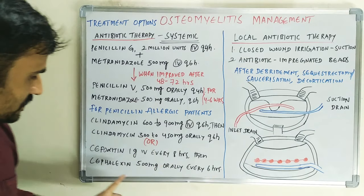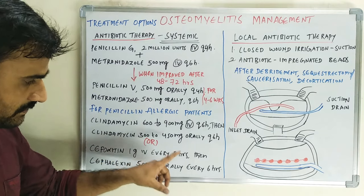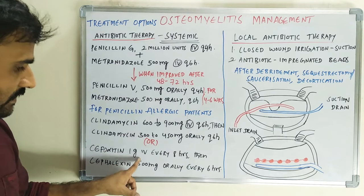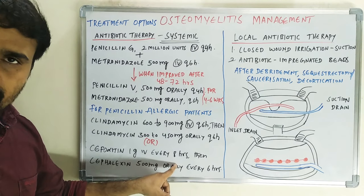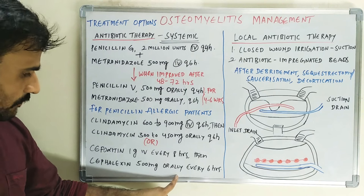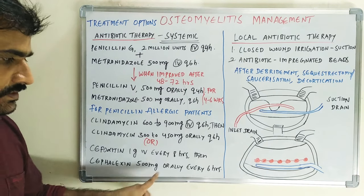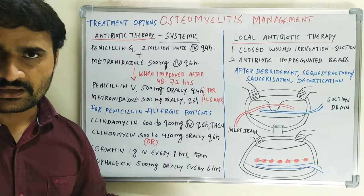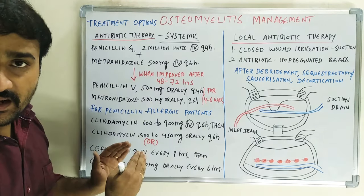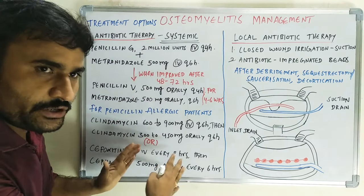Another option is cephalosporins. Cefoxitin is given 1 gram IV every 8 hours, then changed to the oral route at 500 mg every 6 hours. This covers both normal patients and penicillin-allergic patients, completing the systemic antibiotic therapy section.